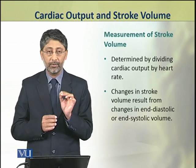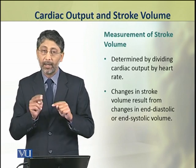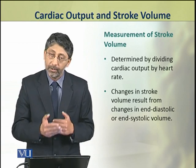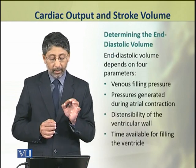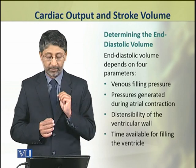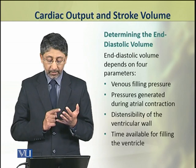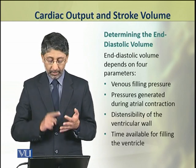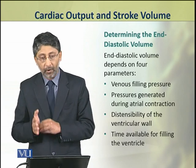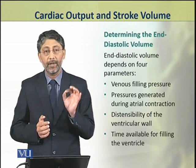Changes in stroke volume result from changes in end diastolic or end systolic volume. The end diastolic volume depends on four parameters: number one, venous filling pressure; number two, pressure generated during atrial contraction; number three, distensibility — any expansion of the ventricular wall; and number four, the time available for filling the ventricle.